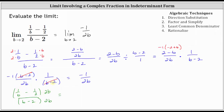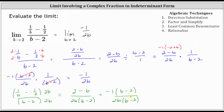In the numerator, one over b times 2b gives 2, and then minus 2b times one-half gives b. This is still divided by 2b times the quantity (b minus 2), which we leave in factored form. From here, we factor out negative one from the numerator, giving negative one times (b minus 2). The common factor of (b minus 2) cancels, and we get the same simplified expression of negative one over 2b. Either method works for simplifying the complex fraction.